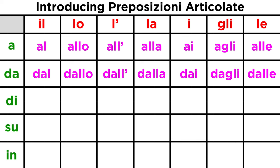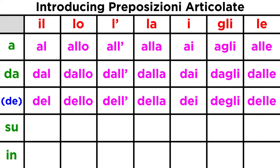For di, we first modify into de, and then get: del, dello, del, della, dei, degli, delle.